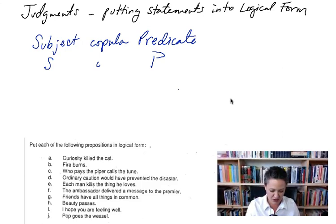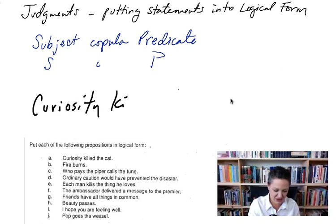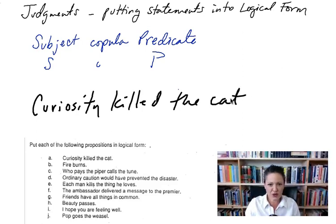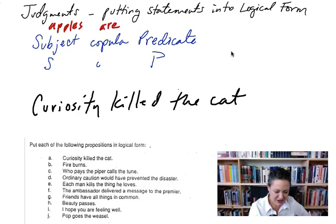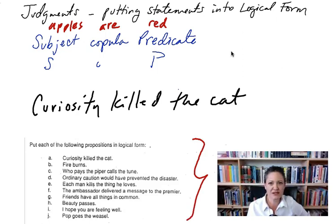Alright, so we're going to start with curiosity killed the cat. I'm just going to write that sentence here. Curiosity killed the cat. Alright, now we don't have a copula. Remember a copula is, is. So subject copula predicate is like apples are red, right? So we don't have an are or an are not. We don't have a copula in this sentence. Actually in all of these sentences we're missing a copula.